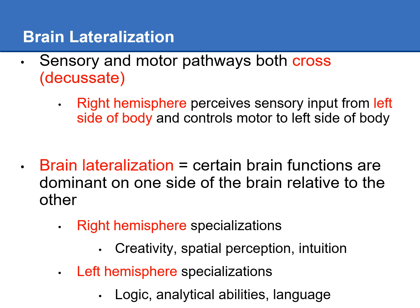We also have brain lateralization. Because we have two hemispheres — right and left — the sensory and motor pathways will cross, or decussate. So if you poke your left finger on a thorn, that sensory information travels up to the right hemisphere. Then the right hemisphere sends motor signals down to your left arm to tell you to pull it back. We call this crossing decussation.